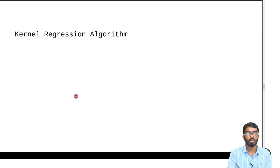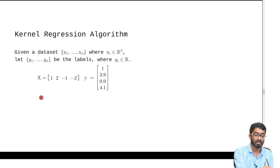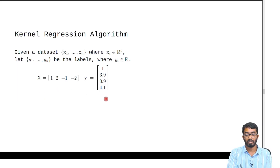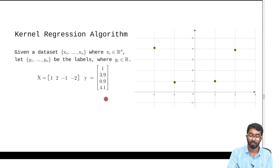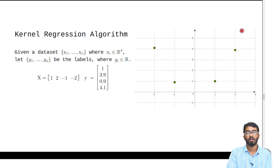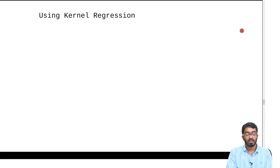Now let's go on to the kernel regression algorithm. For this algorithm, we have selected a new data set where x is this while y is this. Plotting x and y, we see the following plot, and as you can see, the mapping is somewhat of a quadratic function. So let's use kernel regression.